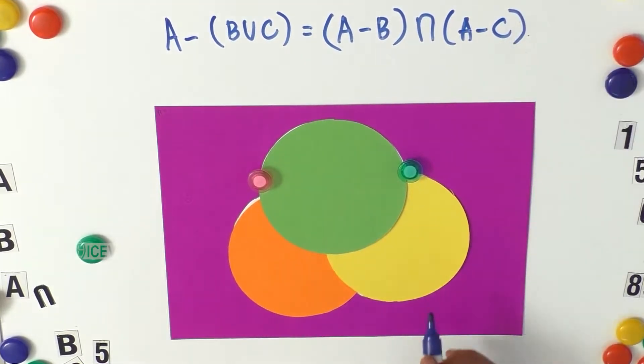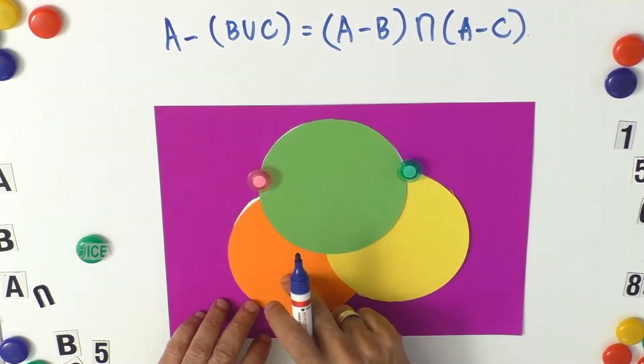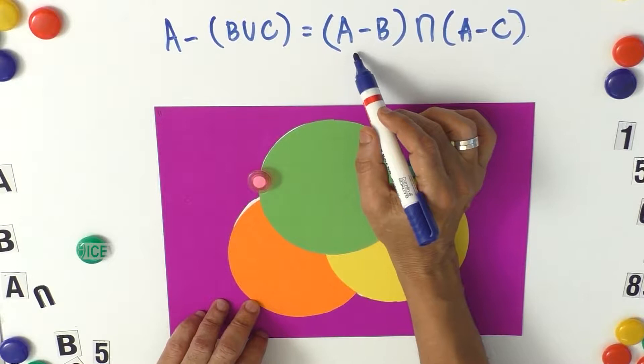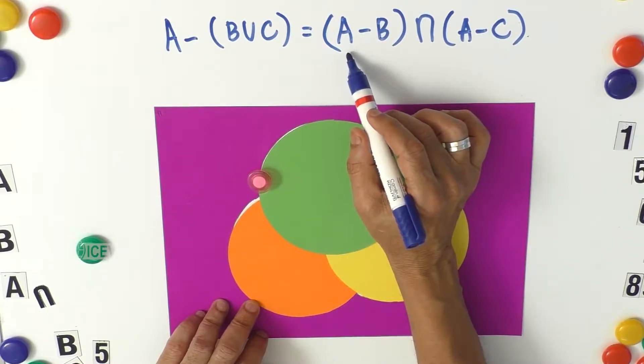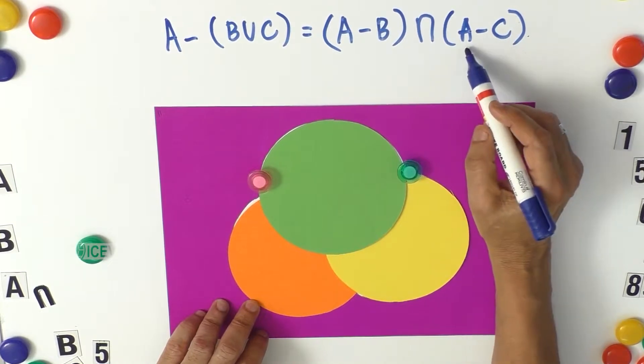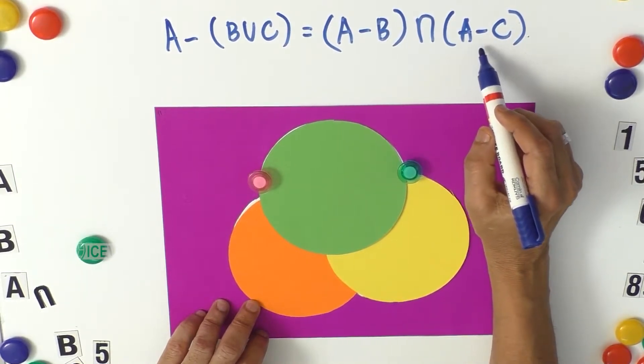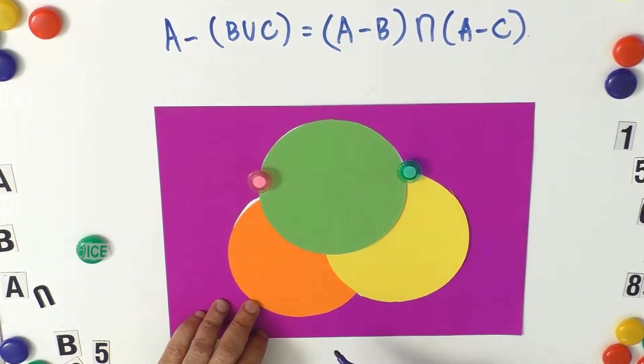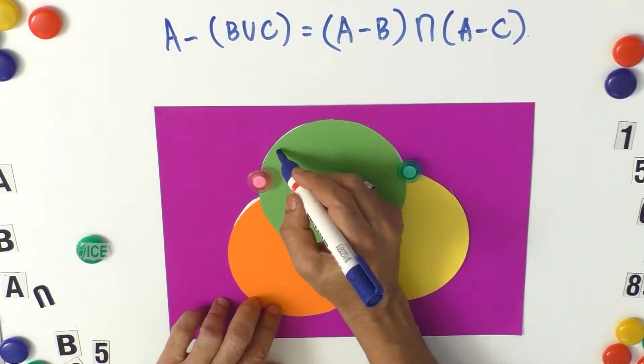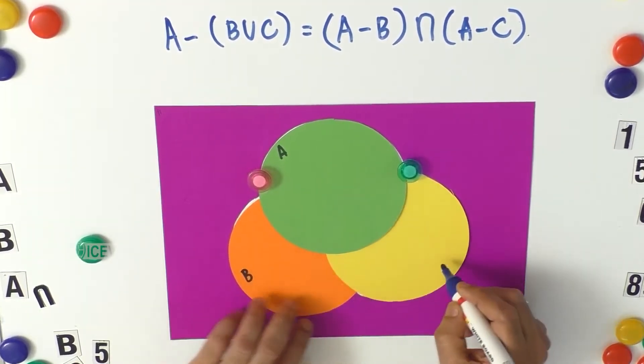We have to prove that the difference set A minus B. What is A minus B? The objects of A which are not in set B. What is A minus C? The objects of A which are not in C. So what happens here? Let us call the three sets A, B and C.